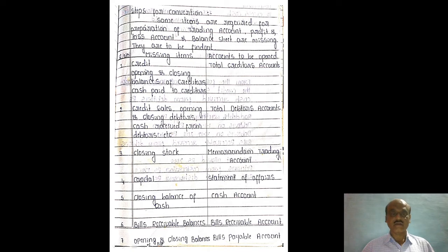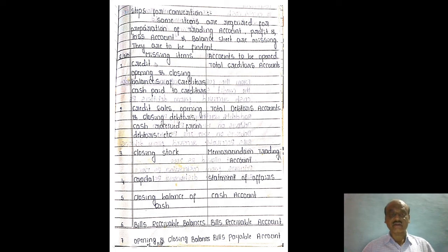You can use this chart for opening creditors, closing creditors, then cash paid to creditors, then credit purchases. So credit purchases, opening and closing balance of creditors, cash paid to creditors — these give total creditors.